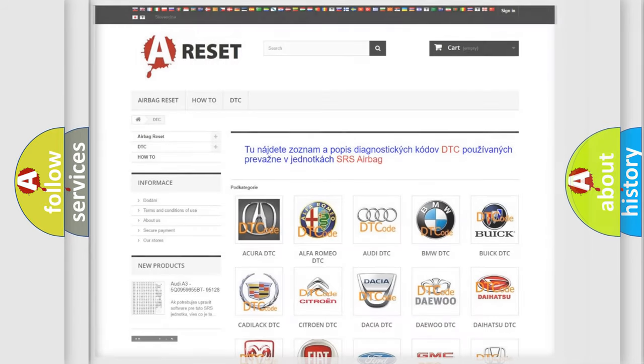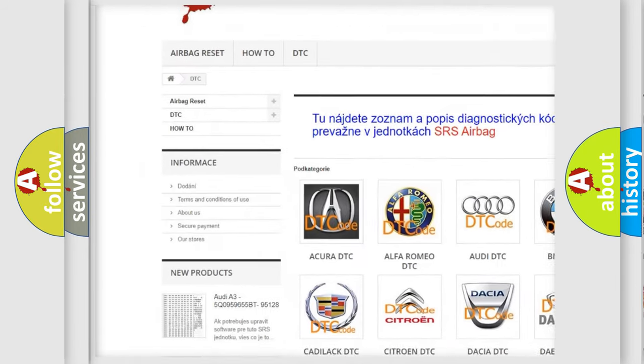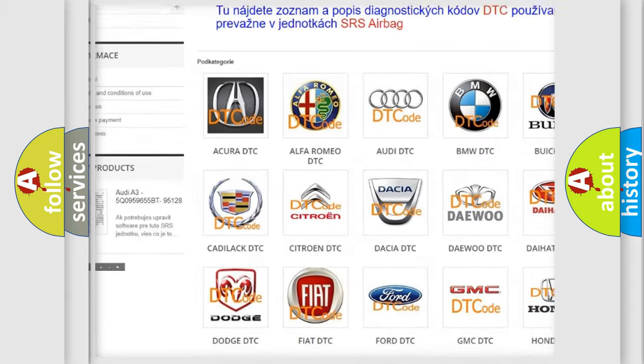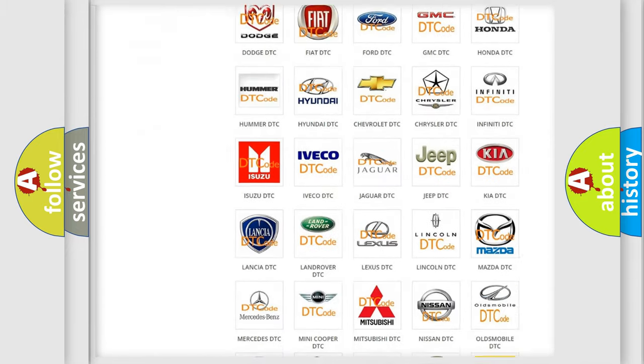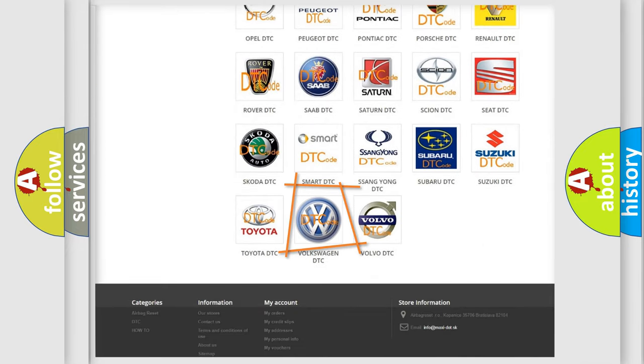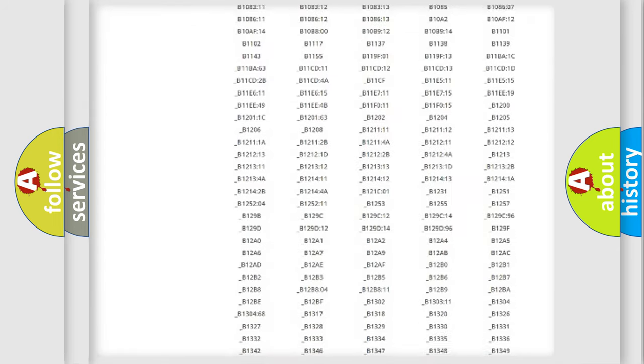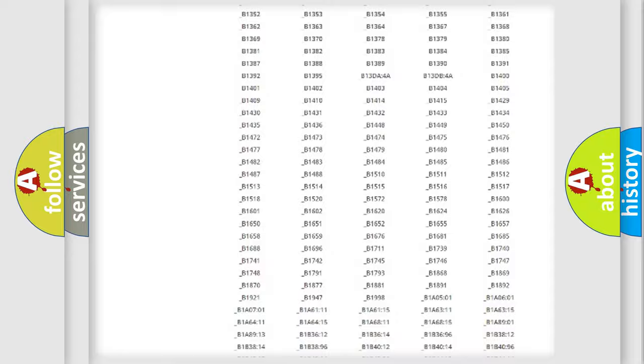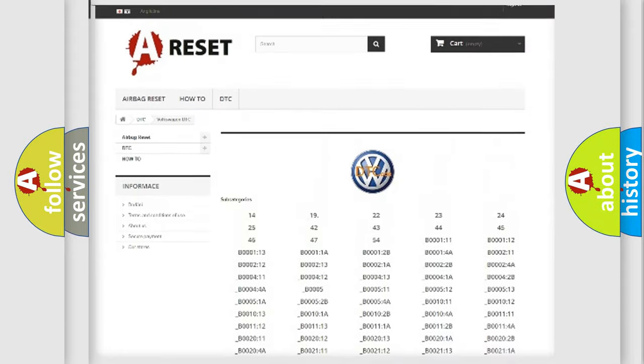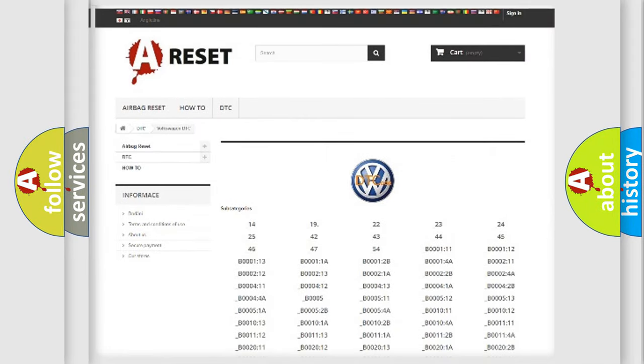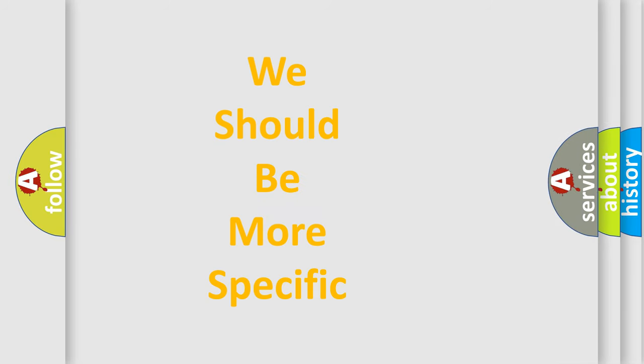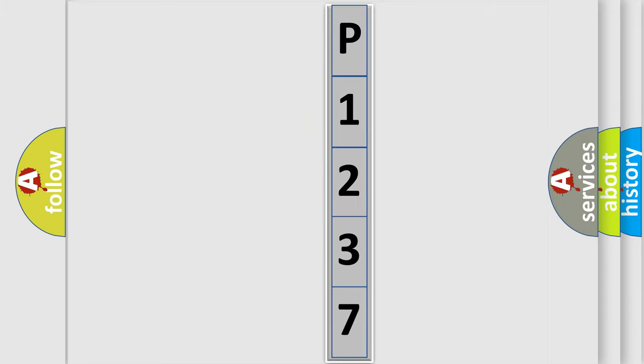Our website airbagreset.sk produces useful videos for you. You do not have to go through the OBD2 protocol anymore to know how to troubleshoot any car breakdown. You will find all the diagnostic codes that can be diagnosed in Volkswagen vehicles, also many other useful things. The following demonstration will help you look into the world of software for car control units.